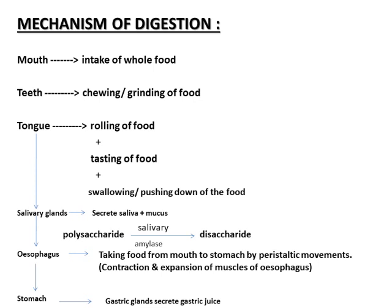Saliva secreted by salivary glands is basic in nature, so it kills microbes that enter with food. Saliva also contains the enzyme salivary amylase, which helps in the breakdown of complex polysaccharides to disaccharides. Food is formed into a bolus and transferred to the oesophagus, where it moves with the help of peristaltic movements — contractions and expansions of the oesophagus muscles. No digestion takes place in the oesophagus as no digestive enzymes are present. At the end of the oesophagus, a sphincter called the oesophageal sphincter prevents food from being regurgitated back.